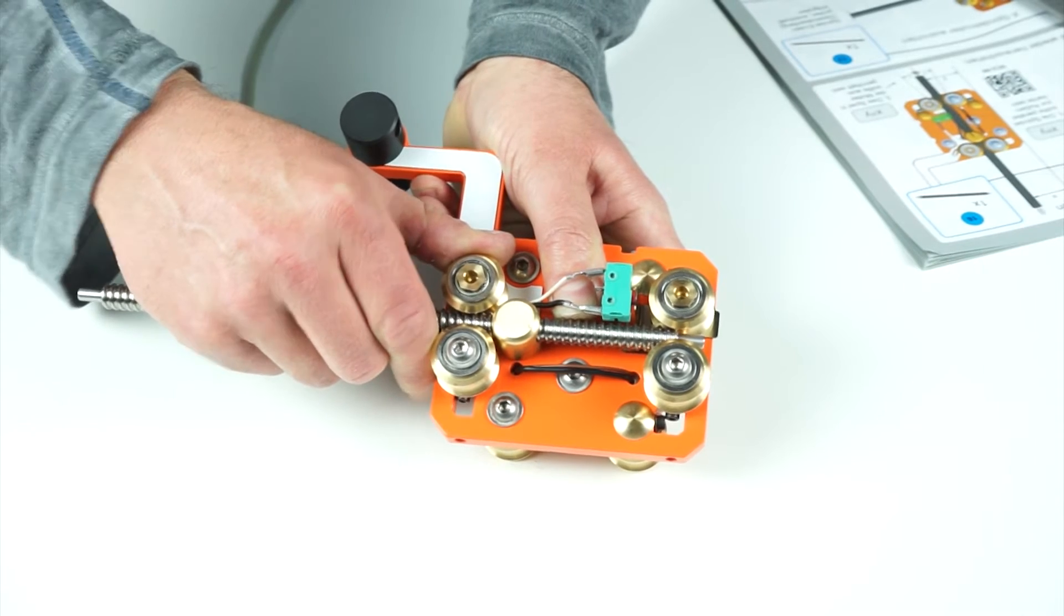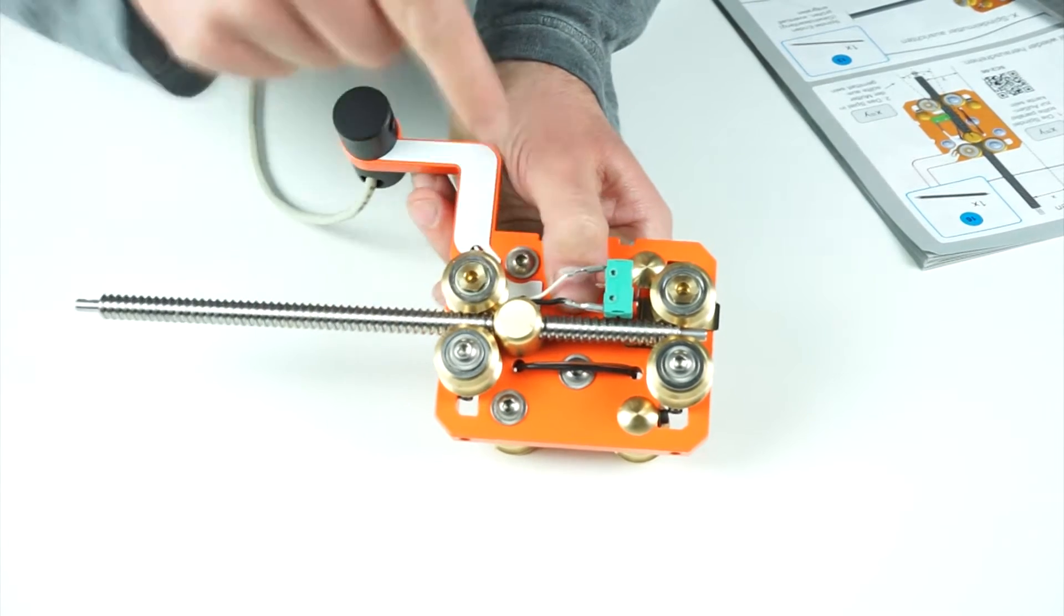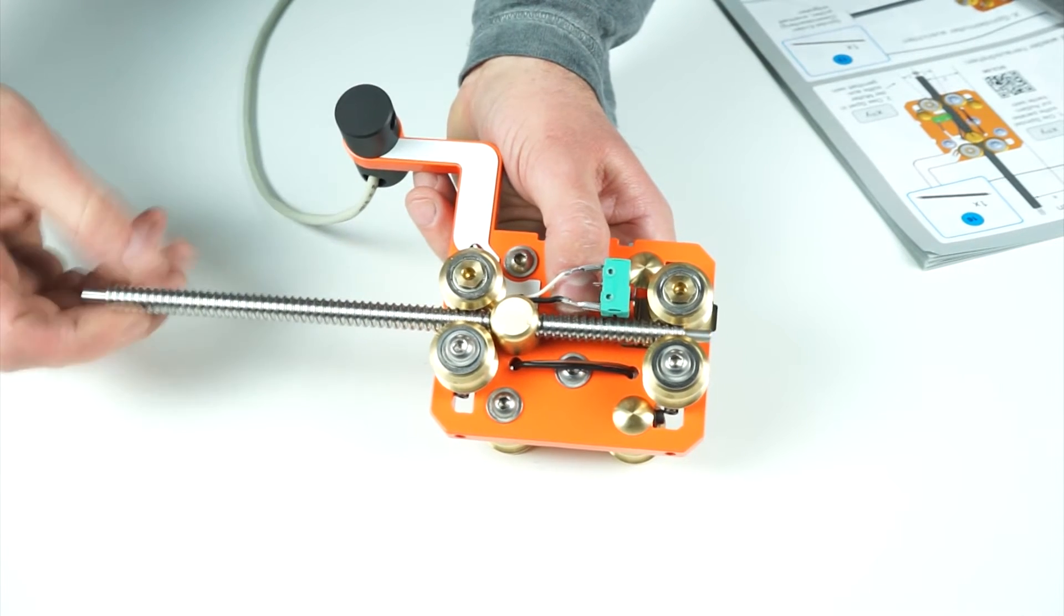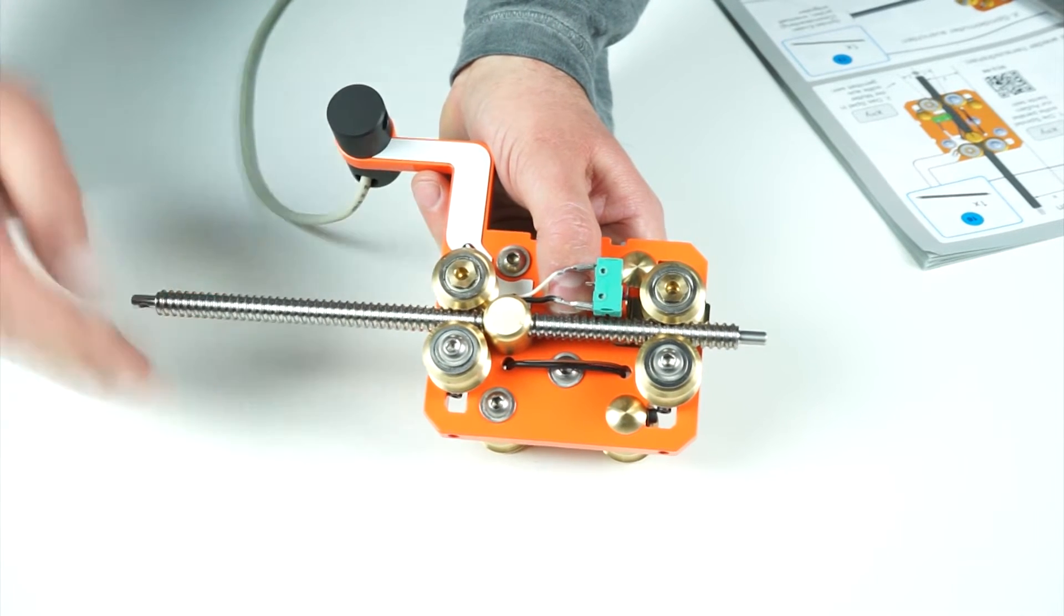You want to be sure that the lead screw passes through the center of the right hand set of track rollers. Continue threading until the lead screw nut is in the center of the lead screw.